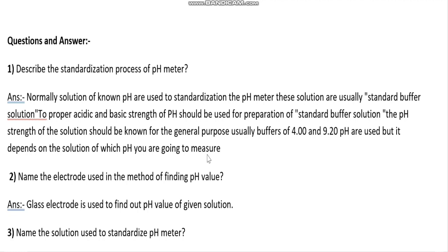Question and answer: describe the standardization process of pH meter. Normally, solutions of known pH are used for standardization of a pH meter; these solutions are usually standard buffer solutions. To properly represent acidic and basic strength, the pH should be known. For general purposes, buffers of pH 4 and 9.2 are used, but it depends on the solution whose pH you are going to measure.